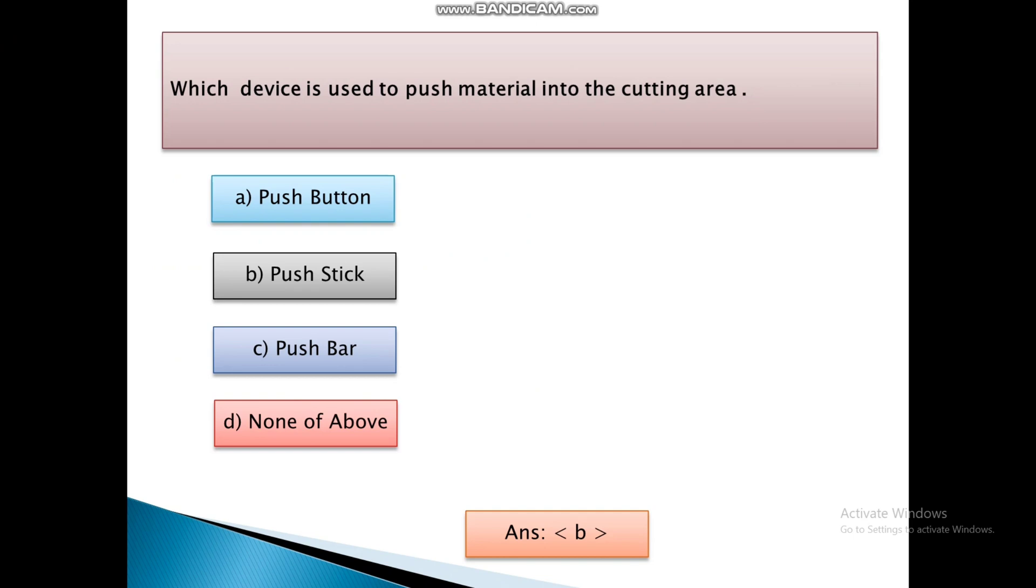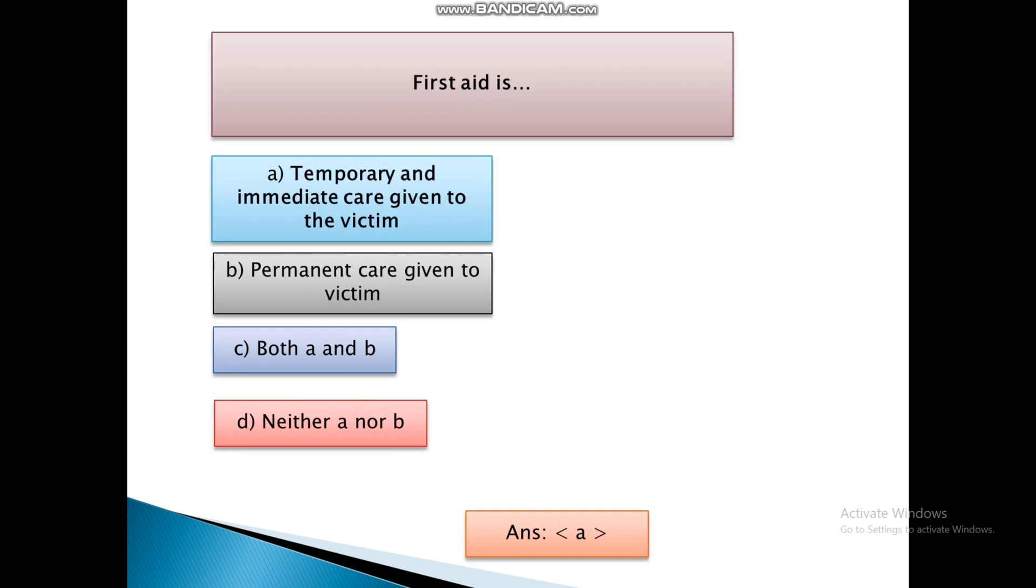First aid is: First, Temporary and immediate care given to the victim. Second, Permanent care given to the victim. Third, Both A and B. And last is Neither A nor B. And the answer is A, that is first aid is temporary and immediate care given to the victim.